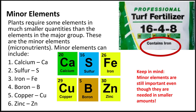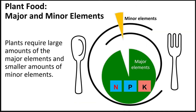Without iron, plants would not be able to produce chlorophyll, which gives plants their healthy green color. So plants require both macro or major and micro or minor nutrients, just in different quantities.